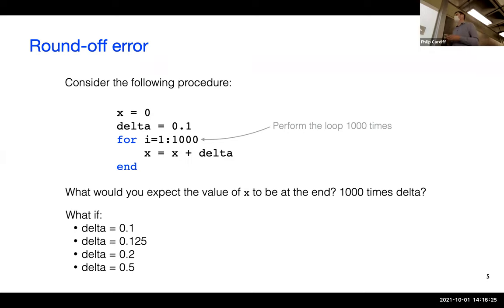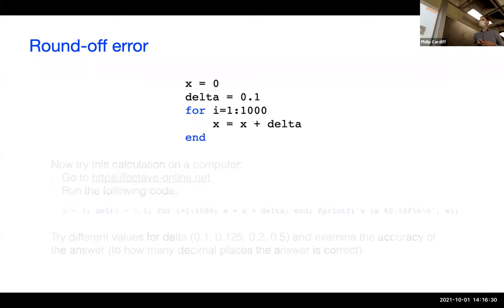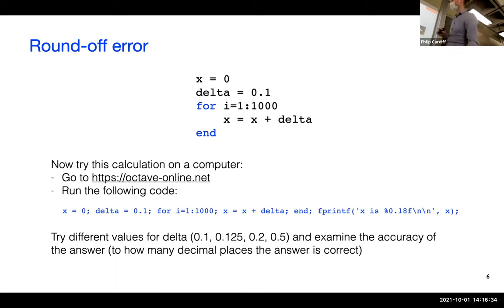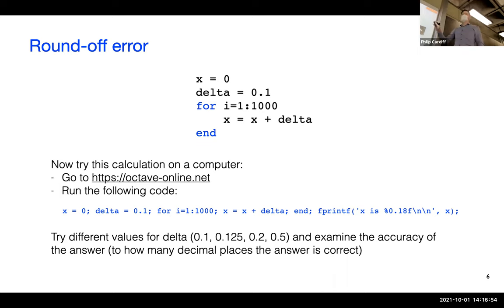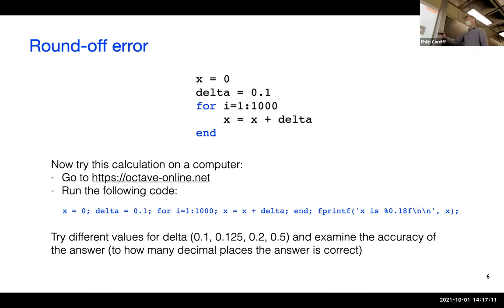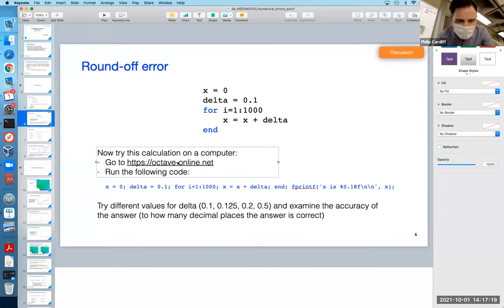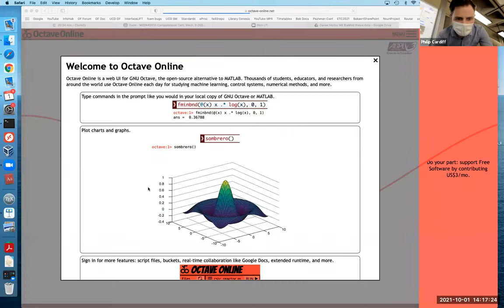What happens if I try different values for delta — 0.125, 0.2, 0.1? You'd expect the answer to just be one thousand times that value. You can try this in MATLAB or in Octave Online, which is a free alternative to MATLAB with the same syntax. I'll write the code in one line using semicolons as statement separators, using fprintf to print the value of x to 18 decimal places.